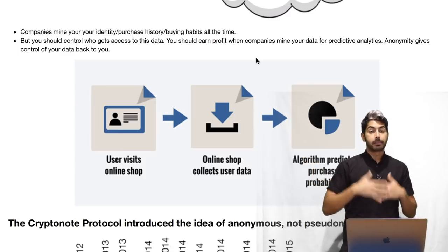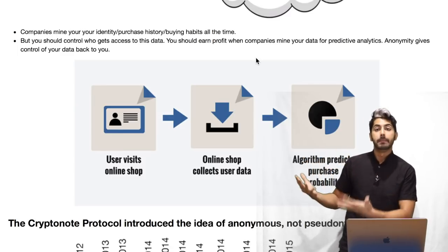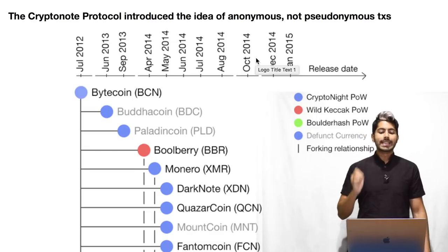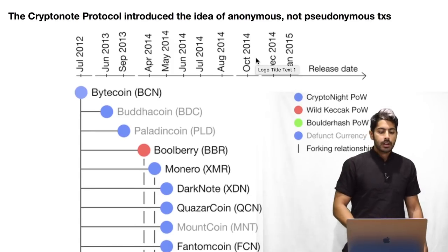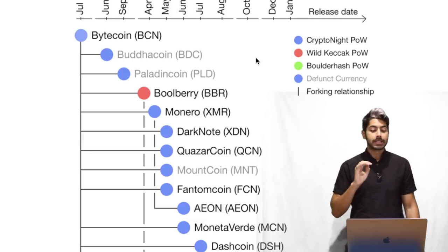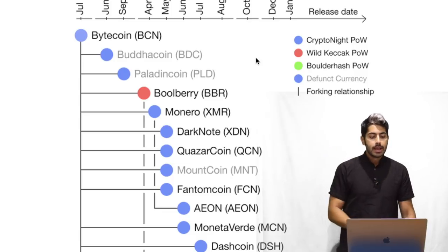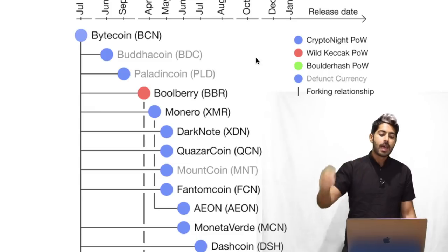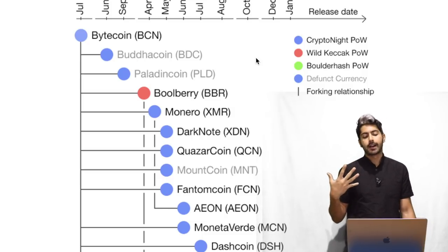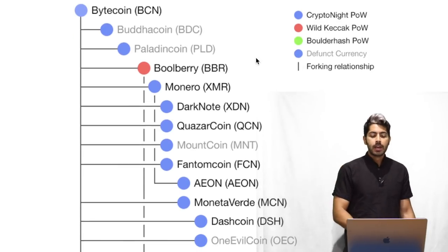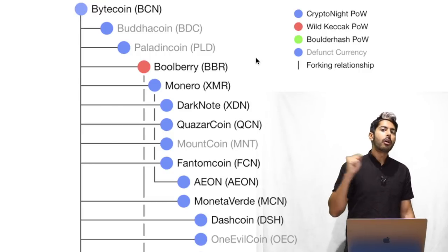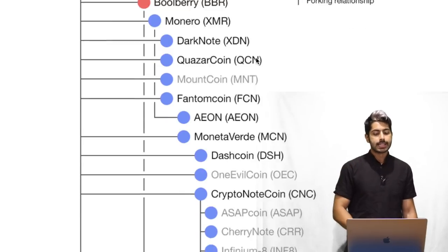If a user visits an online shop, the shop collects user data and an algorithm predicts purchase probability — you should be paid for this. The CryptoNote Protocol introduced the idea of truly anonymous, not just pseudonymous, transactions. It all started with Bytecoin, the first implementation of the CryptoNote Protocol. Then there were offshoots: BudaCoin, PaladinCoin, Bullberry, and then Monero — the one that really took off. Monero is currently around number 10 on CoinMarketCap with about a $7 billion market cap, and it's the most stable and popular of the anonymous currencies.